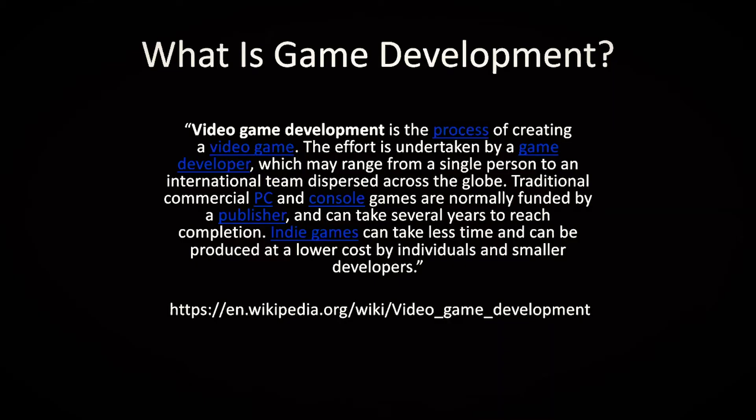Let's jump into it. To kind of simplify things, we've gone to Wikipedia and found a really accurate definition: 'Video game development is the process of creating a video game. The effort is undertaken by a game developer, which may range from a single person — like the guy who made Flappy Bird — to an international team dispersed across the globe, like Ubisoft.'